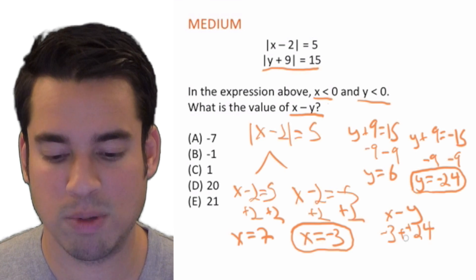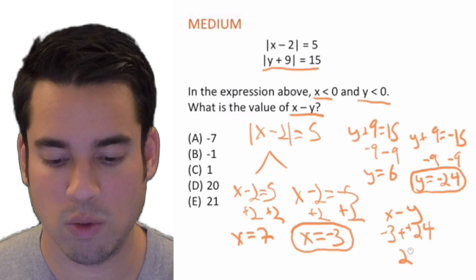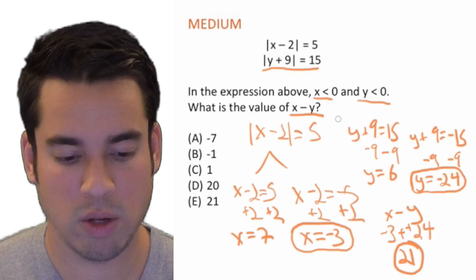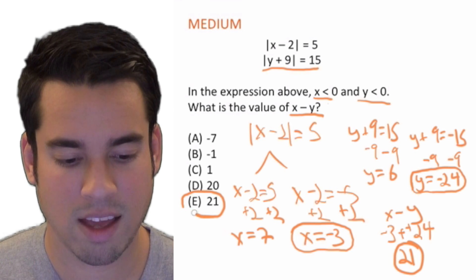Minus minus becomes a plus, so -3 + 24, that gives us 21. 21 is our final answer, E, and done.